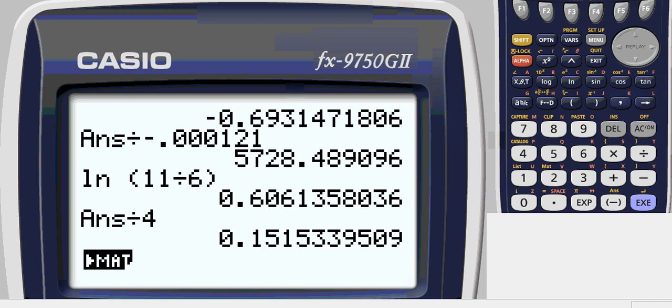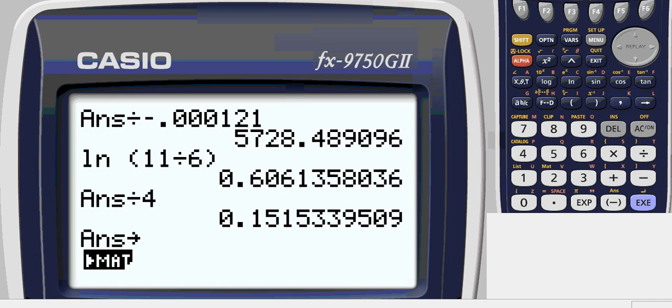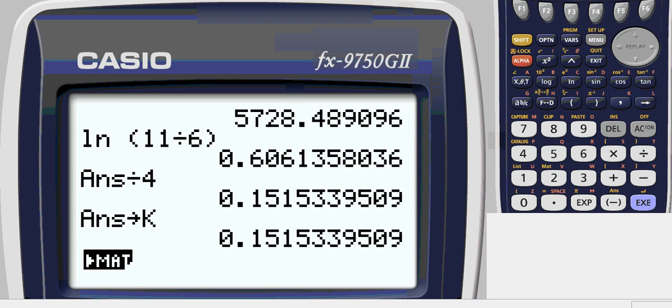Once you have an answer, 0.1515, whatever, push the arrow for store, and then pick a letter for it. Since it represents k, we're going to use k. So alpha k. So you should get answer store k, just like it displays right now. Push enter. And now whenever you use the letter k on your calculator, it'll do this decimal. You don't have to round, it's going to do it as precise as it can.